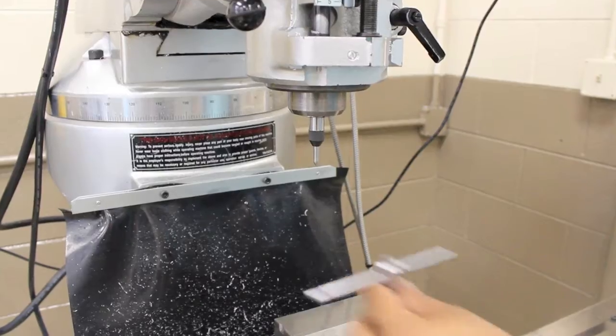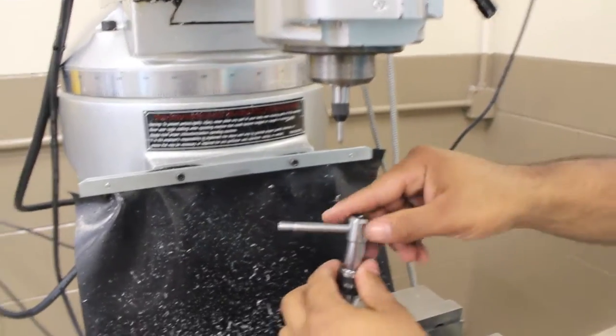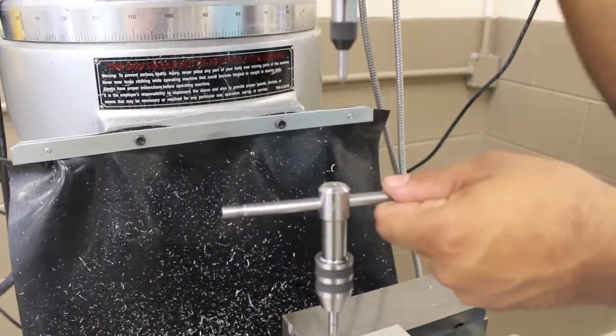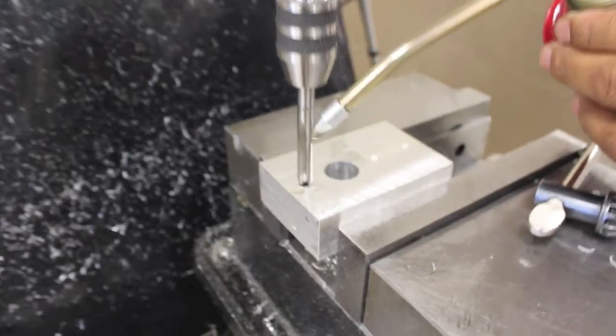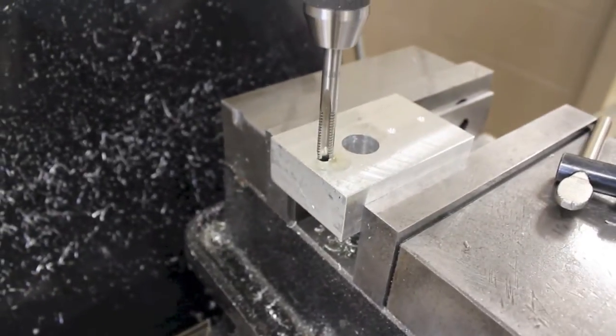Place a tap wrench with the tap inserted under the center and the tap end at the beginning of the hole. Apply cutting oil to aid in the thread cutting process.